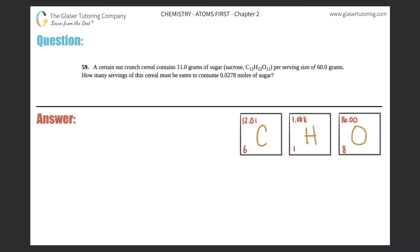Number 59: A certain nut crunch cereal contains 11.0 grams of sugar, which is sucrose C12H22O11, per serving size of 60.0 grams. How many servings of the cereal must be eaten to consume 0.0278 moles of sugar?